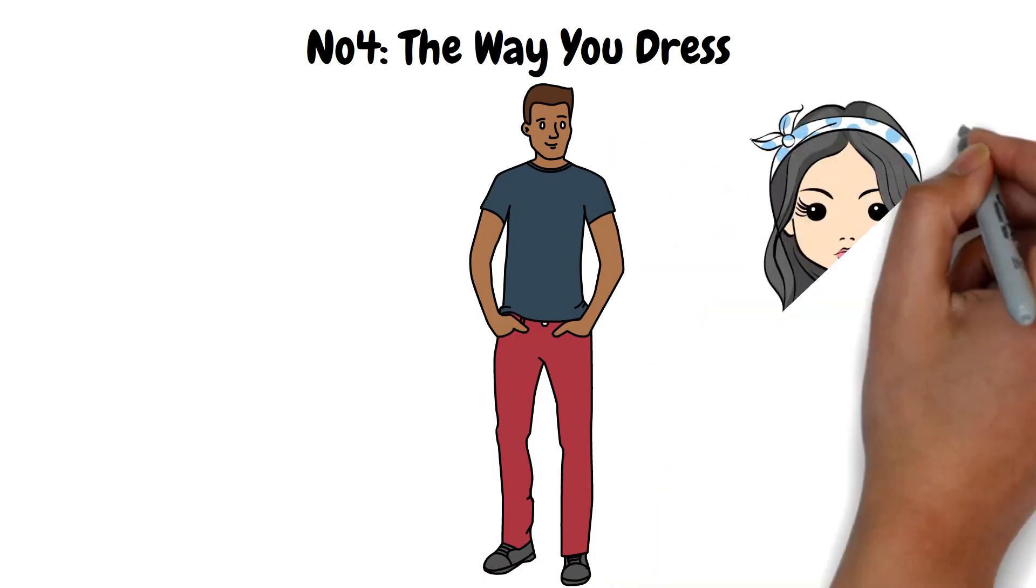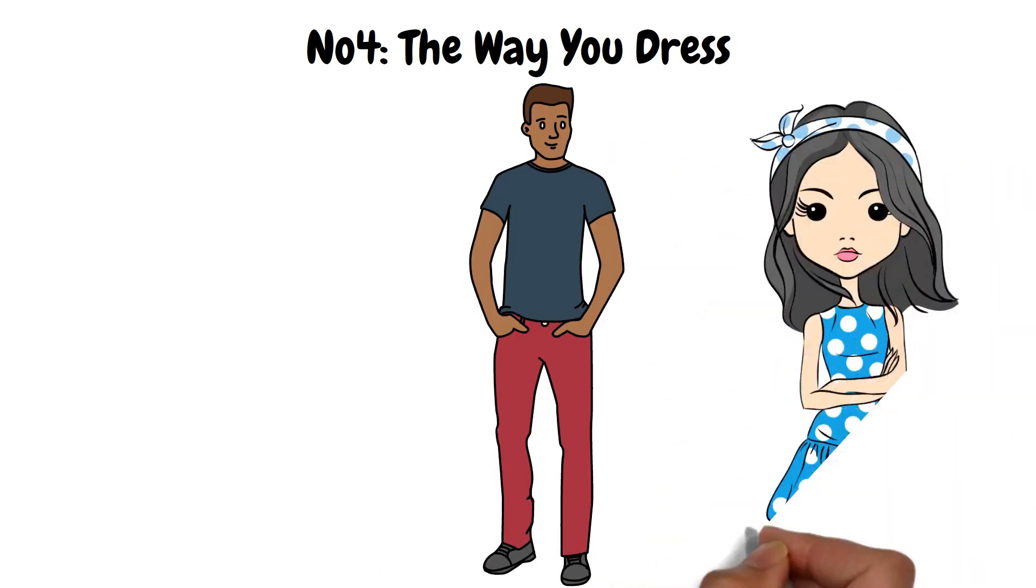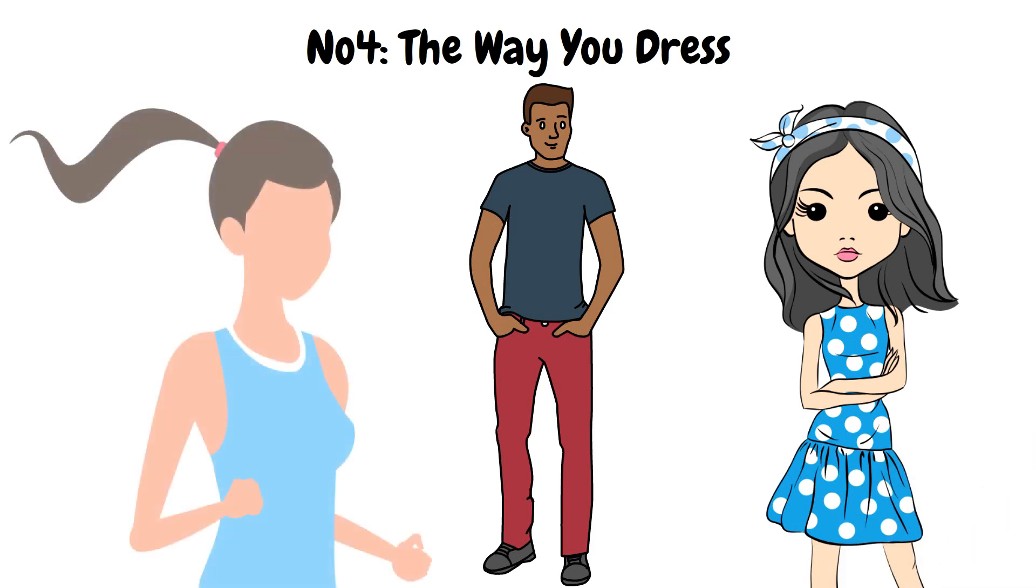If you see someone dressed in colorful clothes and fun patterns, you can assume that they are the artistic type who likes to express themselves through their clothes. Floral print and dresses emphasize femininity and grace. Sporty clothes reveal activeness, confidence, and dependability.